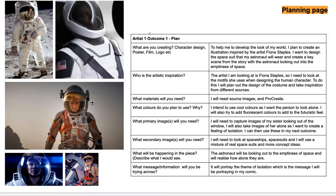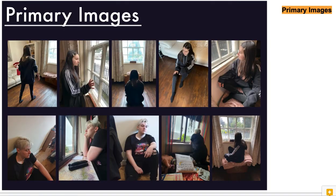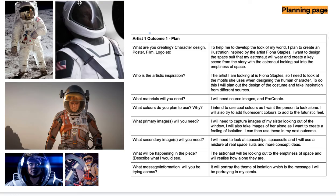The final thing I want you to do is to add a new slide for your planning page. On the planning page, you need to take your Artist 1 Outcome 1 plan — which is this document here — and copy and paste that in. You should also include any secondary images you're going to need to make your Artist 1 Outcome 1. I should now have all the things I need to make my outcome: the primary image I'm going to use, images to help me design the costume, and my plan which tells the teacher and the examiner what I'm going to do. When we finish the actual outcome, we will go back and present this on the template as well.